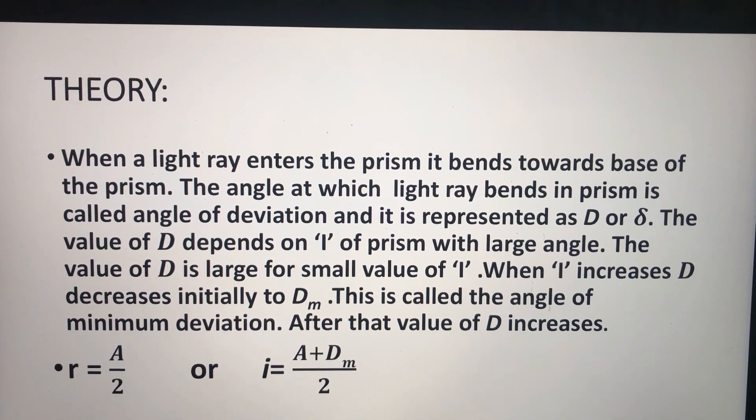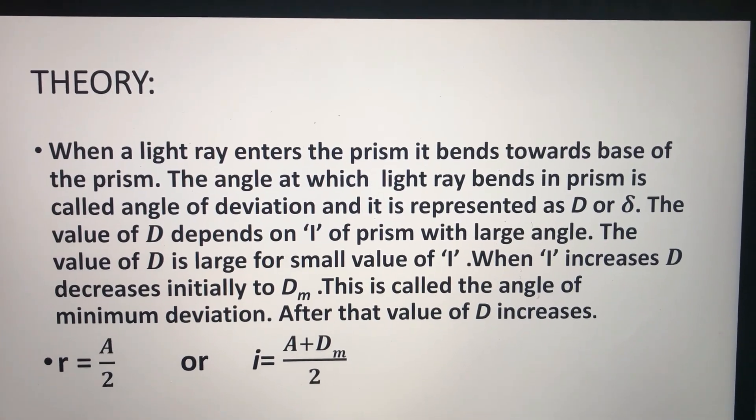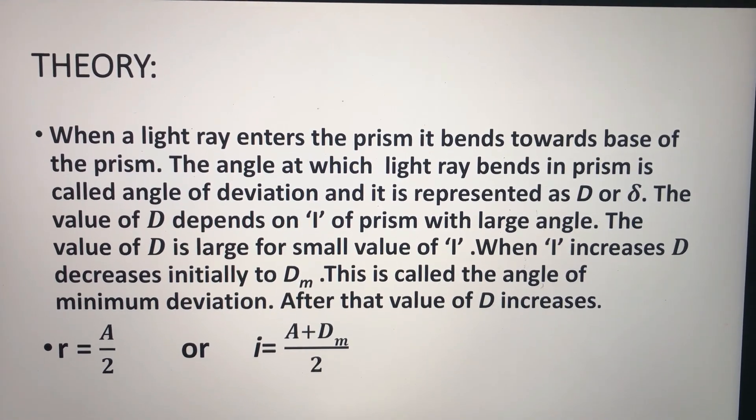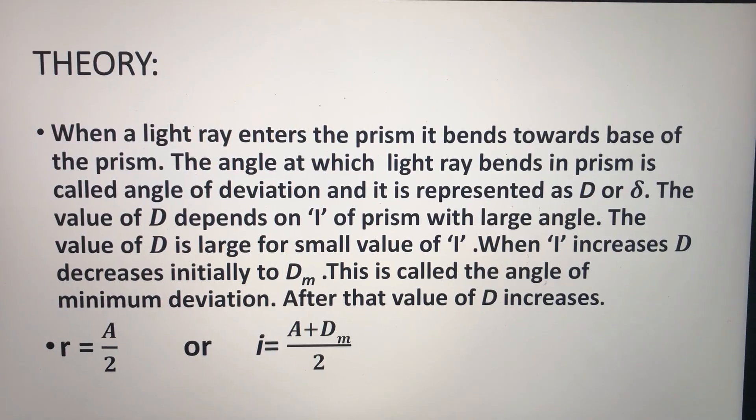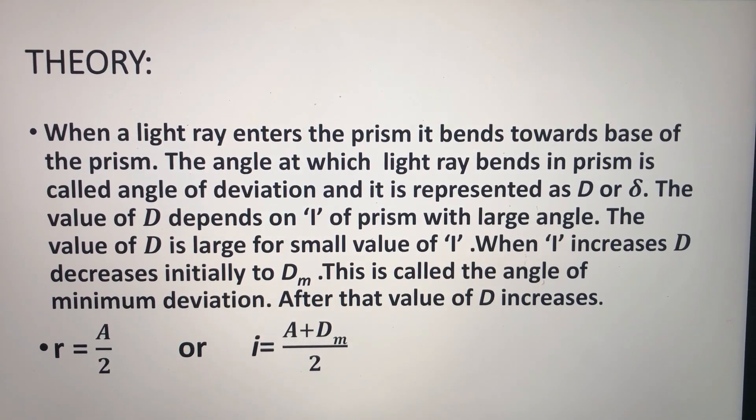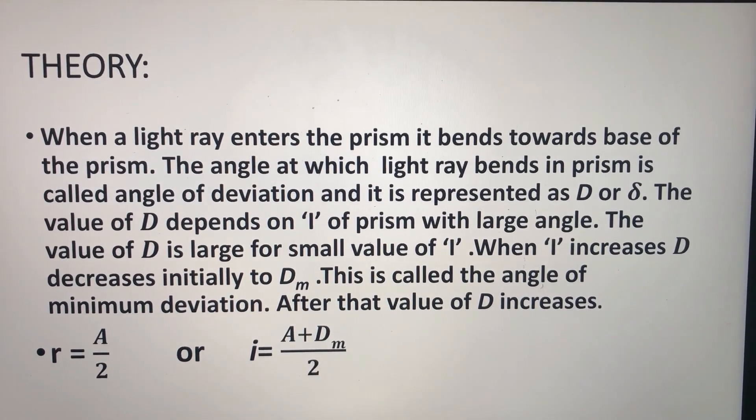Theory: When a light ray enters the prism it bends towards the base of the prism. The angle at which light ray bends in prism is called angle of deviation and it is represented as D or delta. The value of D depends on i of prism with large angle. The value of D is large for small value of i.